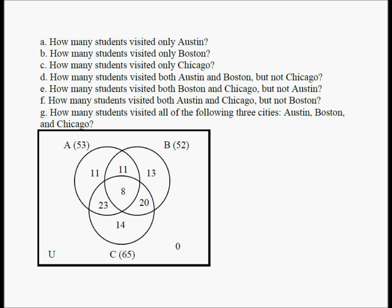Here is the clean Venn diagram with everything filled out. Verify: the four Austin numbers should sum to 53, the four Boston numbers to 52, and the four Chicago numbers to 65. Also, Boston∩Chicago (20+8) = 28, Austin∩Boston (11+8) = 19, and Austin∩Chicago (23+8) = 31. Make sure all numbers are correct, otherwise all answers will be wrong.